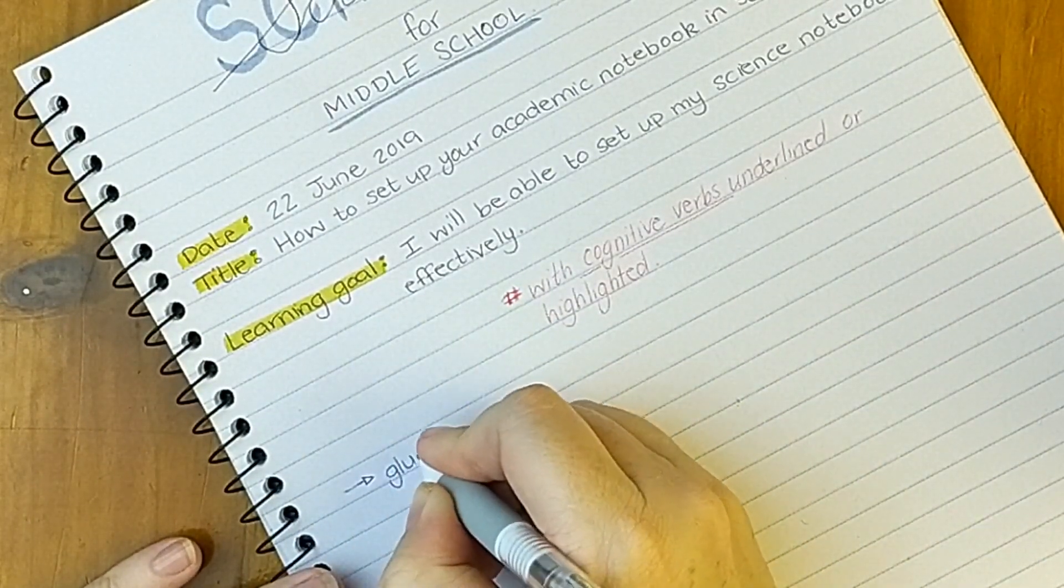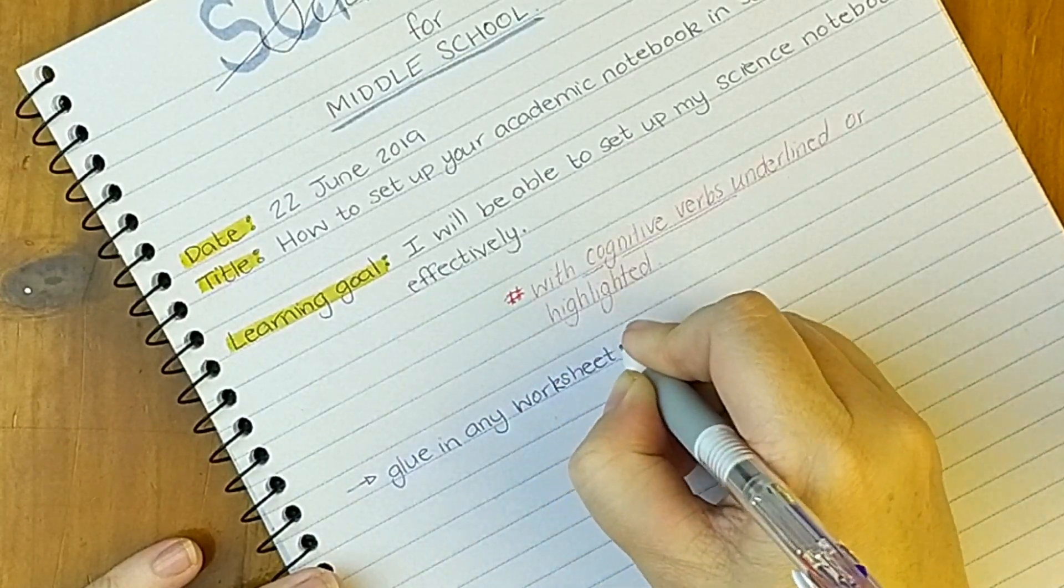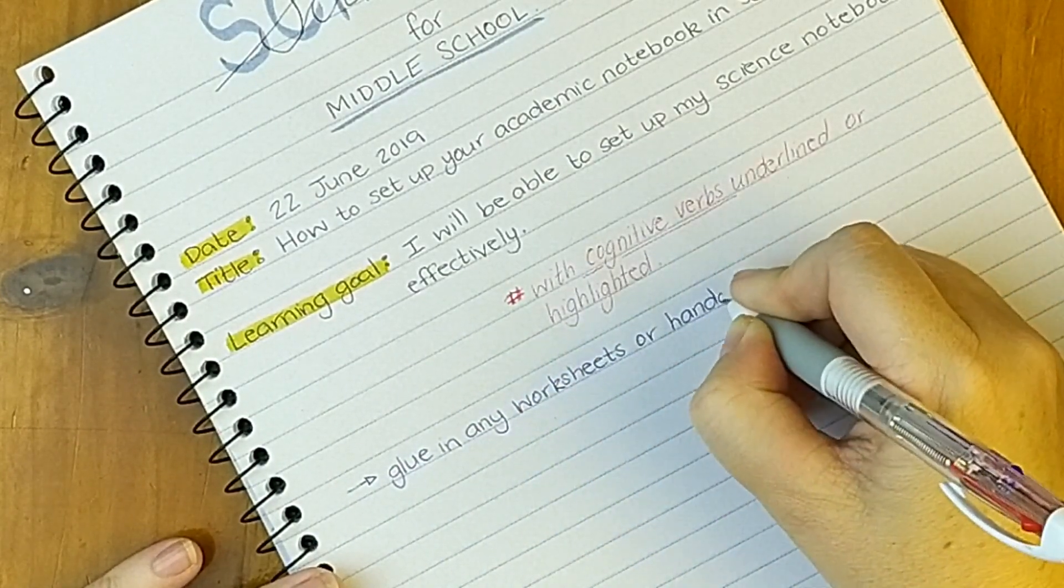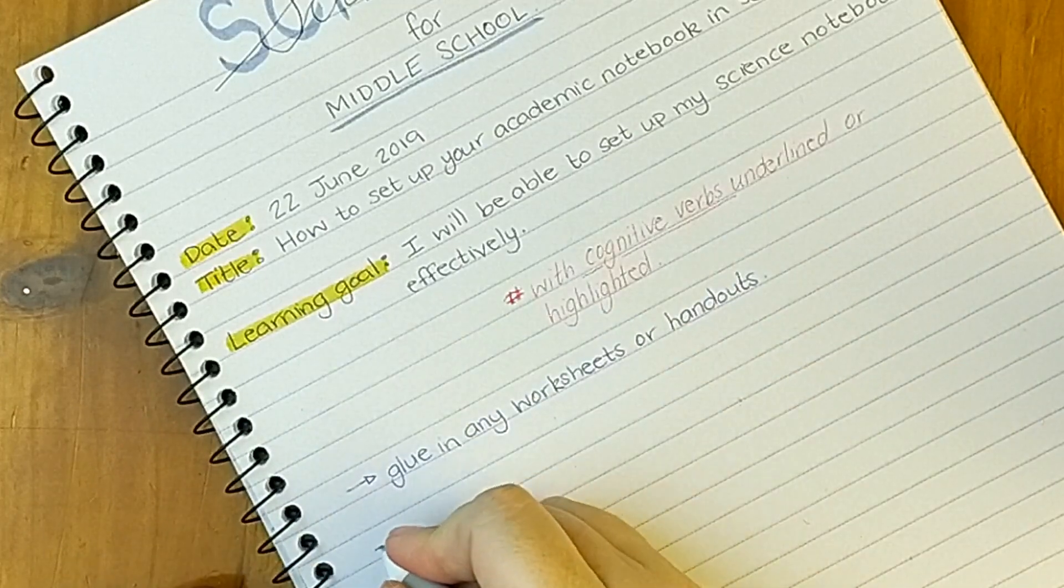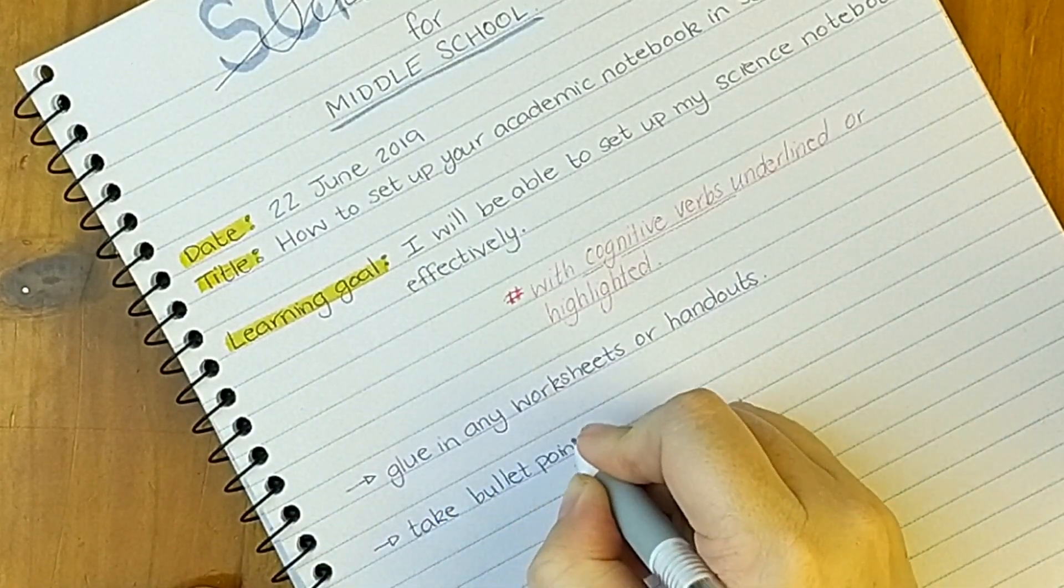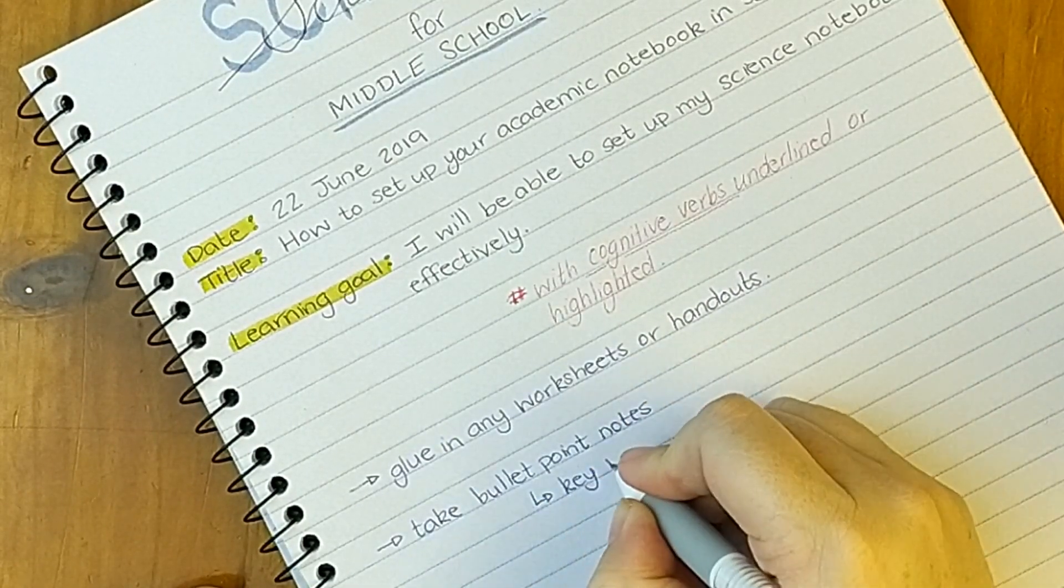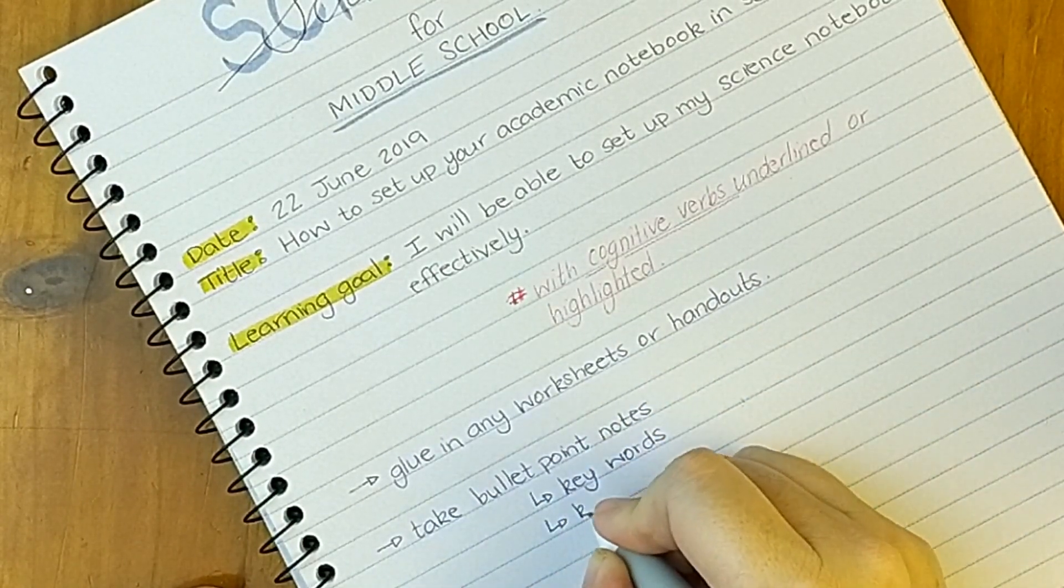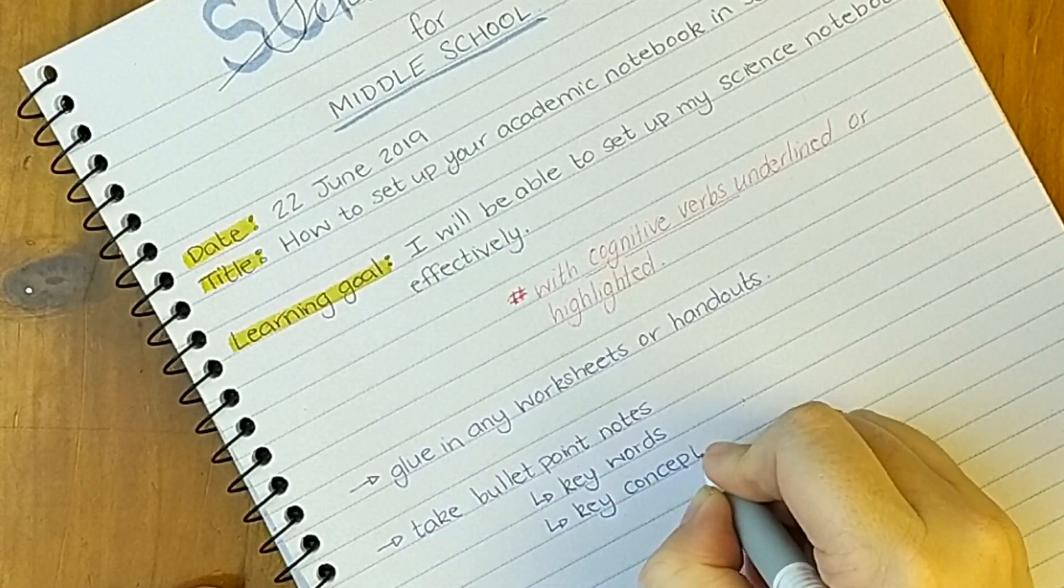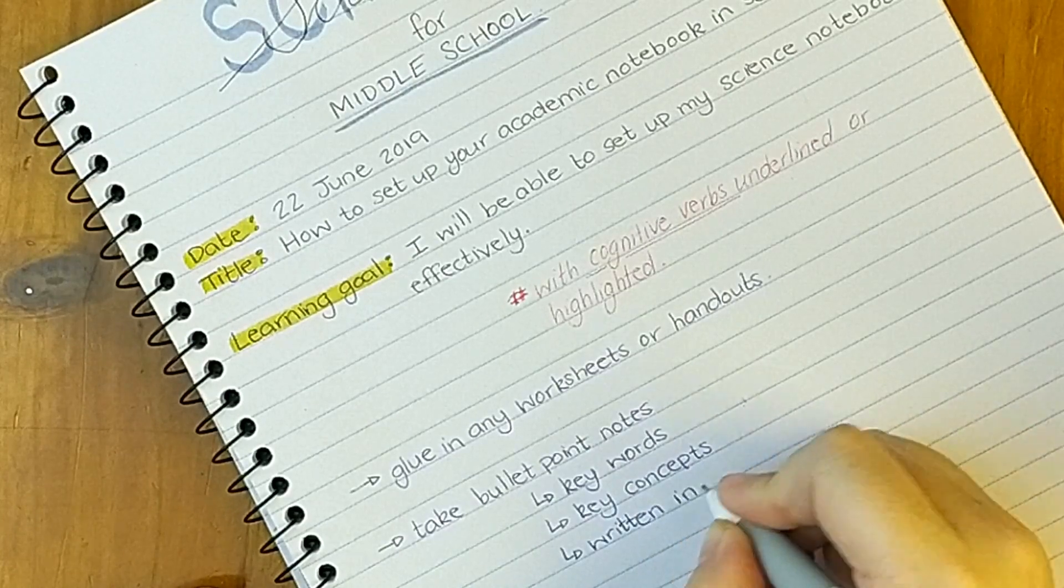If your teacher gives you any handouts or worksheets that you need to work on, it is really important that you glue them into your book. If you just leave them loose you're just going to lose them. You're also going to take bullet point notes, key words, key concepts, and in your own words.